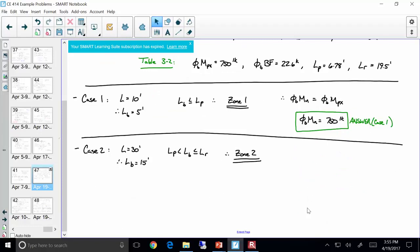So, M sub P for this section is 750 foot kips. That's our answer.